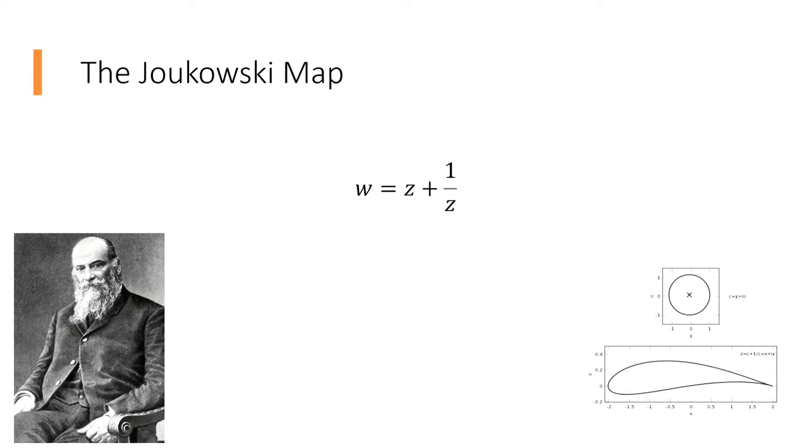Nikolai Joukowsky stated that to obtain a suitable airfoil, the object circle should enclose the point z equals minus 1 and intersect the point z equals 1.